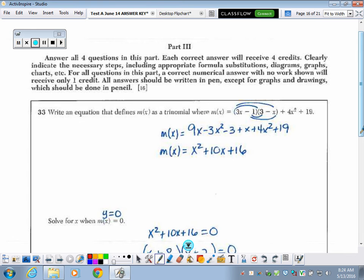Number 32, you can skip over this right now because this is not a problem that we have worked on. Going to number 33. Now, we are into part three of the test. There are four questions totaling 16 points, so these are worth four points apiece. Write an equation. So I need to end up with an equation, hence the equal sign. That defines M of X as a trinomial where it is equal to these two binomials multiplied together plus 4X squared plus 19. So this is pretty self-explanatory. You can look through and see the products that I obtained when I multiplied. Here are these first four terms and then adding on these two at the end. I ended up with this nice trinomial.